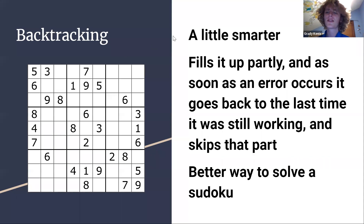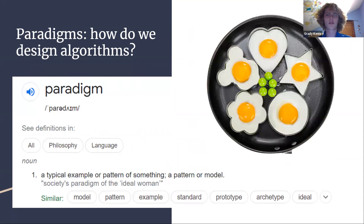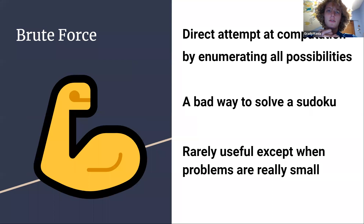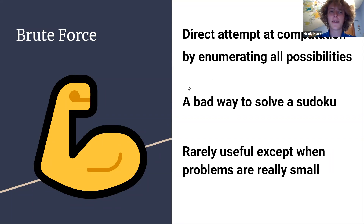Backtracking will save you time, but it won't save you much. When you have a problem, checking whether something is a solution is a lot easier than finding the solution. If you had a lock and a given key, checking whether that key works is a lot easier than making your own key. Brute force exploits that by generating all possible keys and just checking them one by one: is this key good? No. Is this key good? No. And so on, maybe a million times, until — is this key good? Yes.